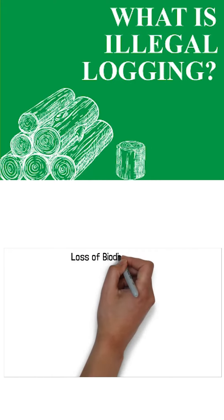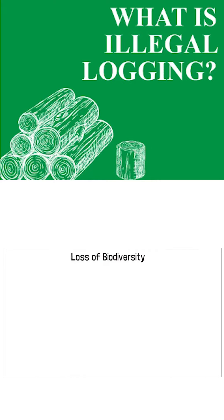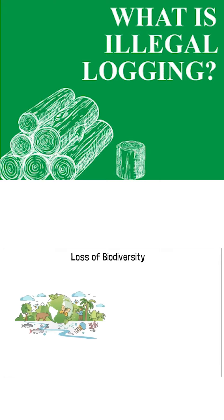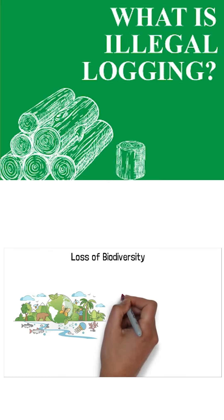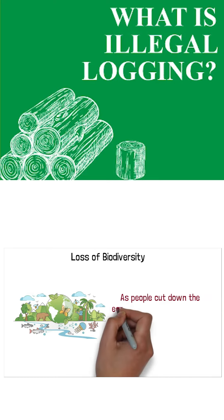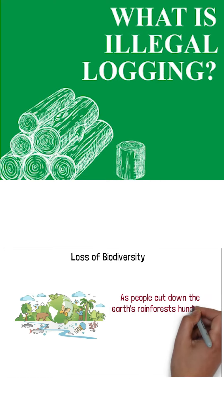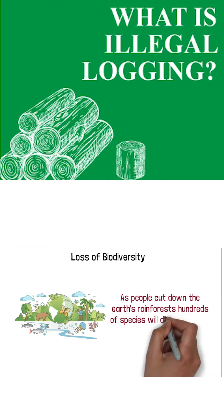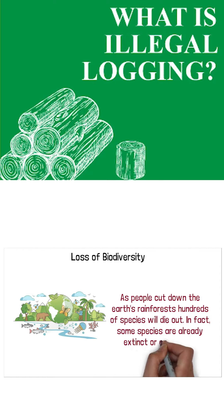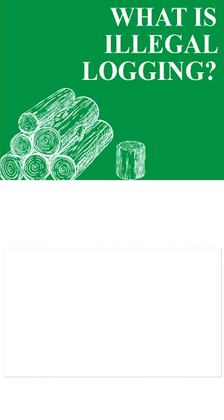Loss of biodiversity is another serious consequence. Forest areas are very important — rainforests are home to 50% of the world's plant and animal species. As people cut down the Earth's rainforests, hundreds of species will die out. In fact, some species are already extinct or endangered.